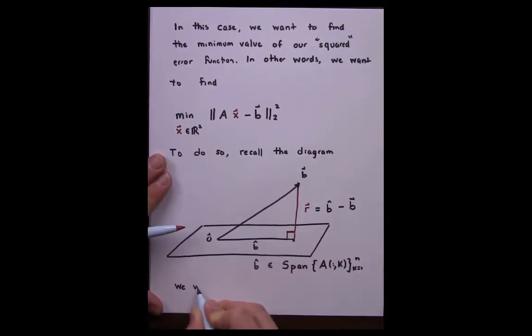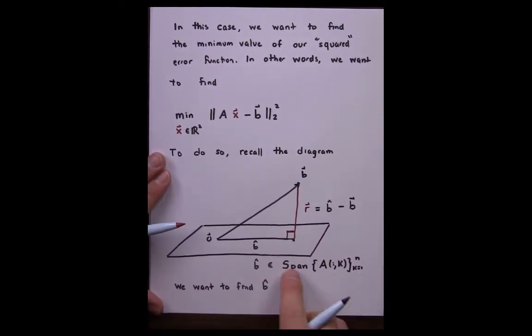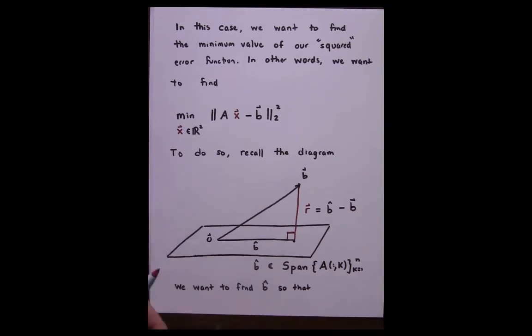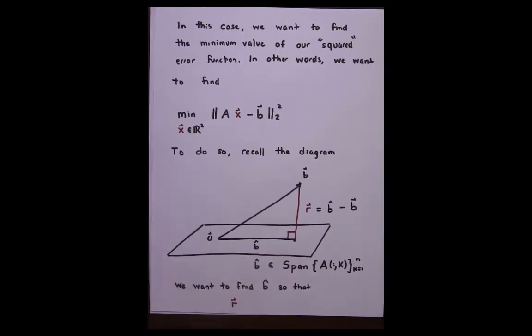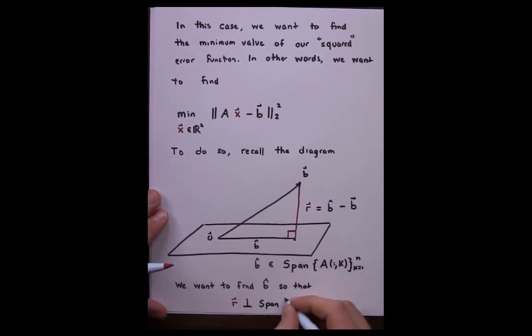We want to find B hat in such a way that the residual vector is orthogonal to the span of the columns of A.